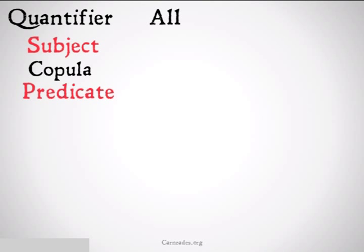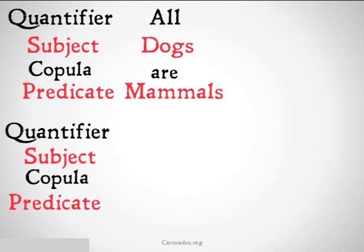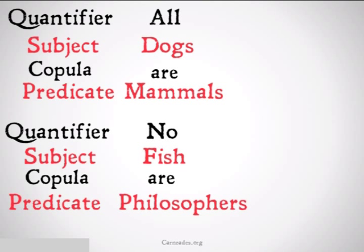For example, the quantifier could be all, the subject could be dogs, the copula are, and the predicate mammals — giving us all dogs are mammals. You could also have no fish are philosophers, with no as the quantifier, fish as the subject, are as the copula, and philosophers as the predicate.